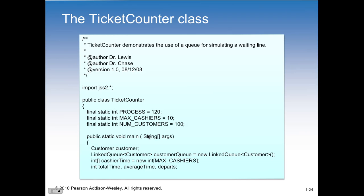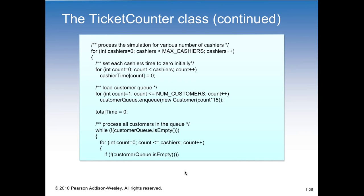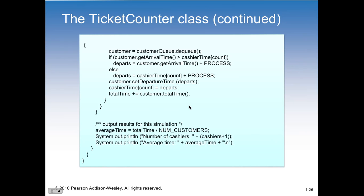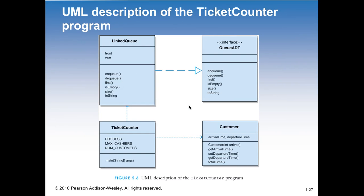Then we have the ticket counter class that's going to have a customer in there, with a maximum number of cashiers and maximum number of customers. We can coordinate the two and add more cashiers if we end up with too many customers. We make an instance of the customer object, make a linked queue - a new queue of customers - and keep track of the cashier times. We have a process that's going to simulate the various different number of cashiers, then load the queue, go through the queue, empty the queue, and keep track of stats. If it's taking too long, we can add another cashier and dynamically affect the speed.